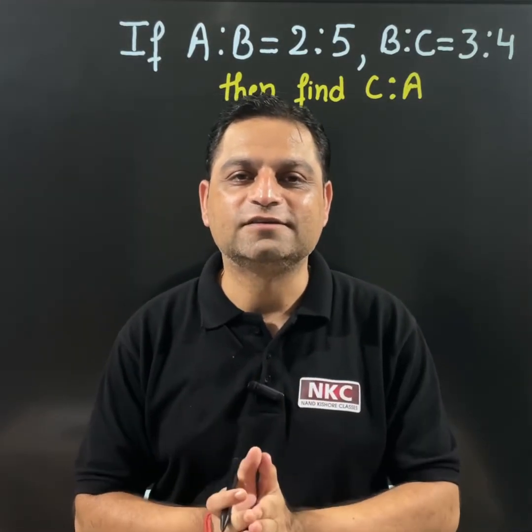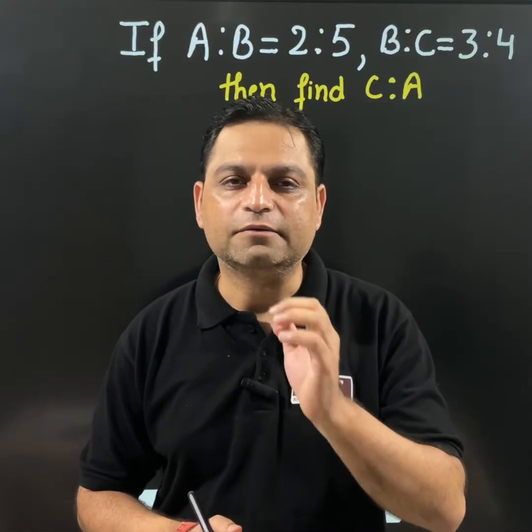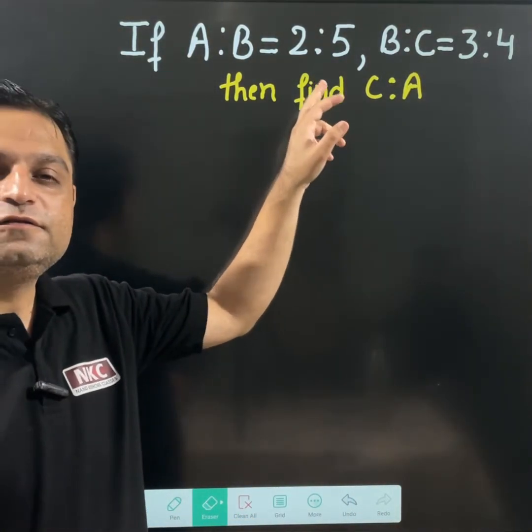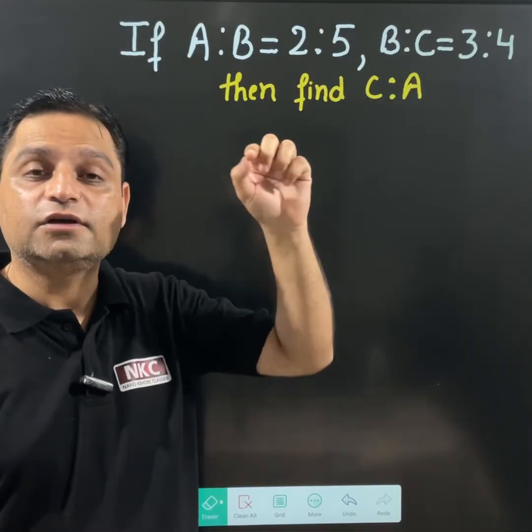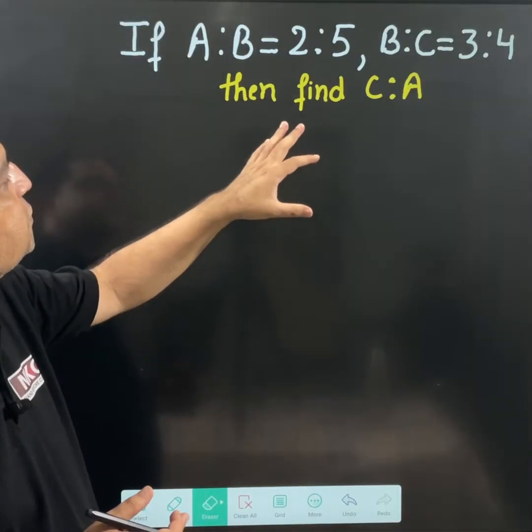Hello friends, welcome to Nankishore classes. Today's lecture is going to be very interesting because today we are going to learn a shortcut trick to find C ratio A. This trick is going to be very helpful in different competitive exams. Please check the question carefully.